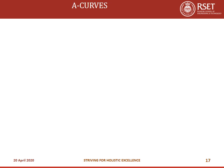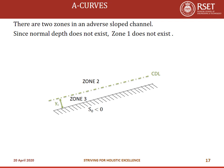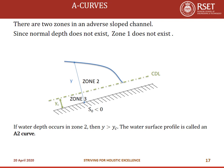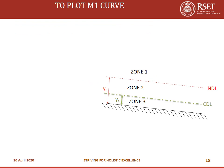A curves are curves in adverse sloped channels where S0 is negative. There is no normal depth since it is non-existent. So only two zones exist: zone 2 and zone 3. If flow depth is greater than yc, the water surface profile is called an A2 curve. If the water surface depth is lesser than critical depth, the curve is called an A3 curve — adverse slope zone 3 curve.